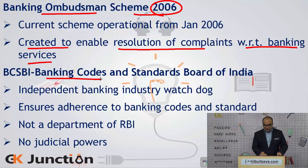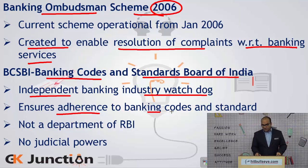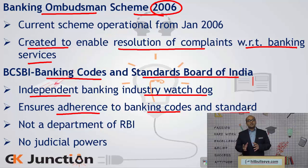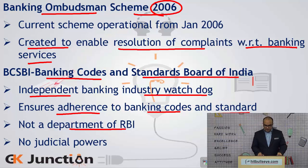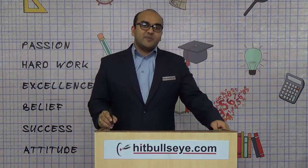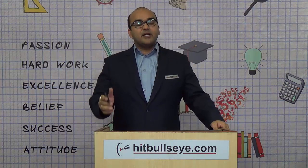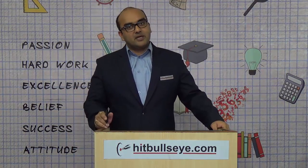Next is the Banking Codes and Standards Board of India (BCSBI). It is an independent banking industry watchdog that regulates or monitors whether certain standards in banking are being met. It ensures adherence to banking codes and standards established by the Government of India and the Reserve Bank of India. BCSBI is not a department of the Reserve Bank of India and it does not have any judicial powers — if BCSBI finds that a bank is violating certain codes and standards, the body itself cannot punish the bank. It will recommend a penalty to the Reserve Bank of India, which has the power to penalize the banks.